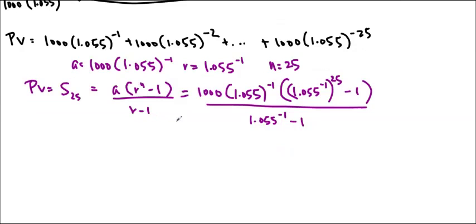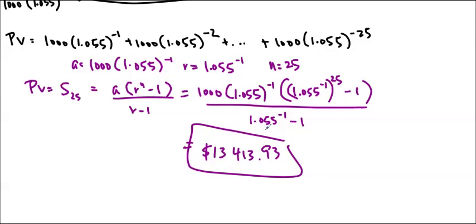Which ends up being $13,413.93. You can see that she has to invest substantially less than $25,000 because she's earning interest on a lot of that money for many years at a time. Thea should invest $13,413.93.